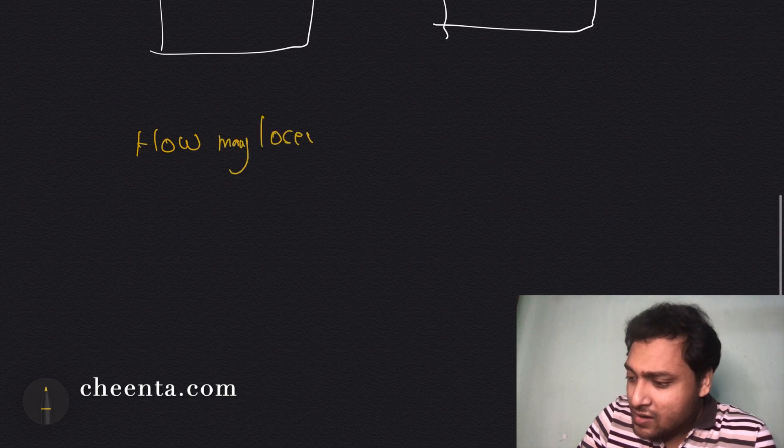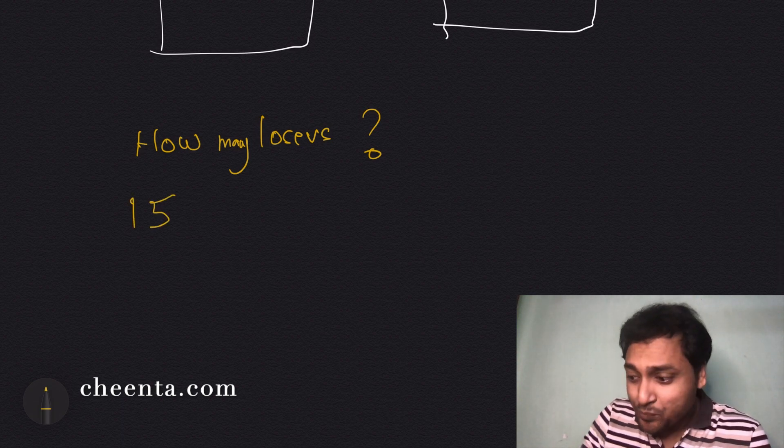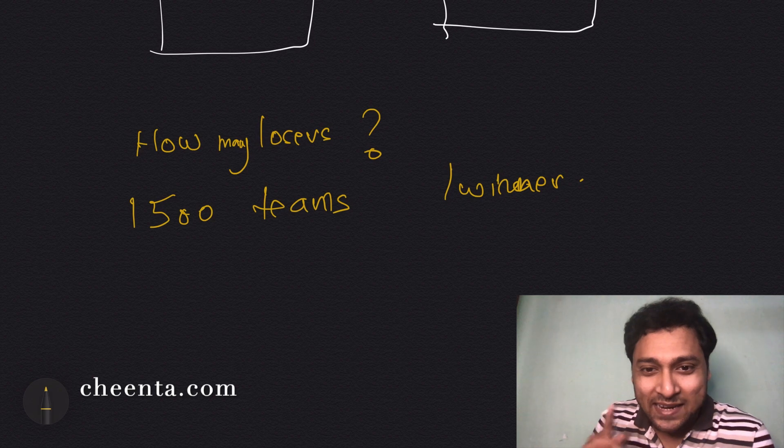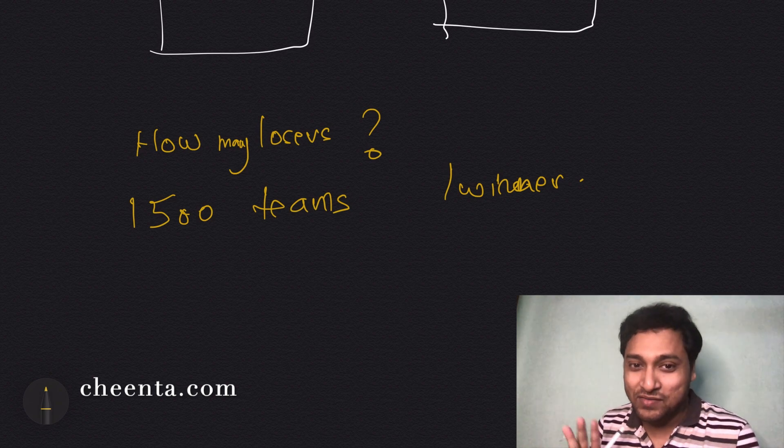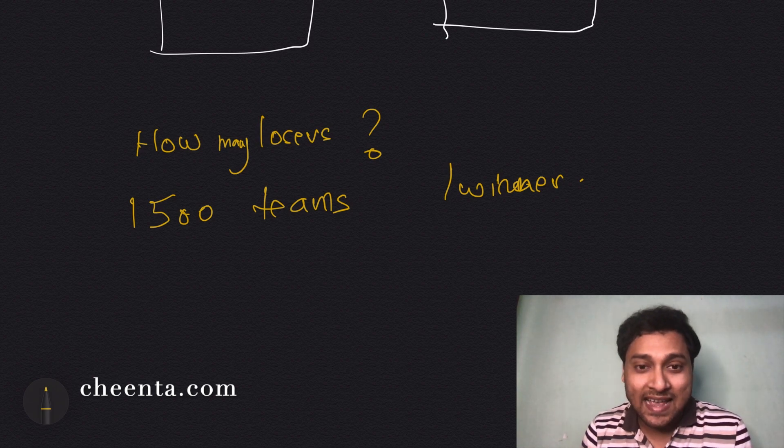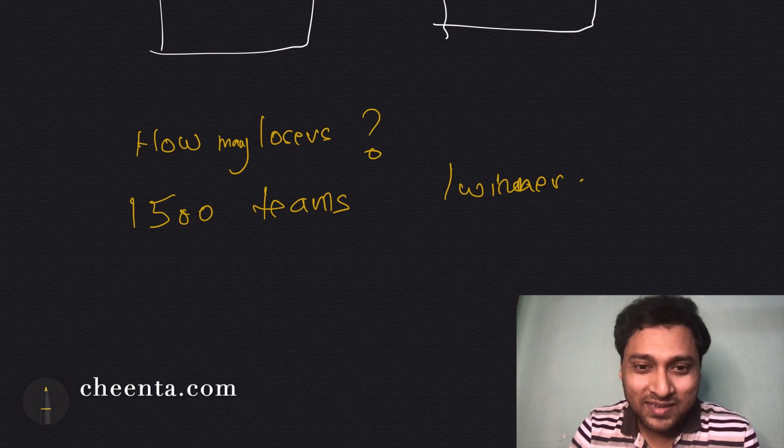How many losers are there in that particular tournament? There were 1500 teams and of course there is one winner. So you can tell me what is the number of losers in the comments. It's very easy, it's just one number. I want you to find it out and put a quick comment in the description. Keep on doing great mathematics and come back to the next video, maybe tomorrow. Take care, bye!